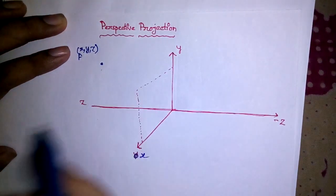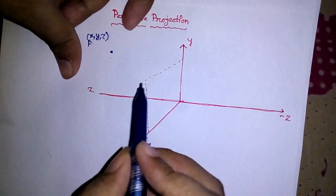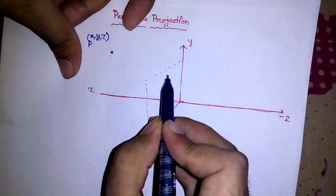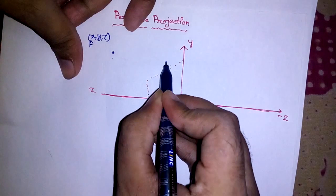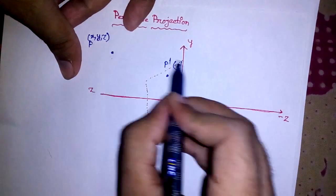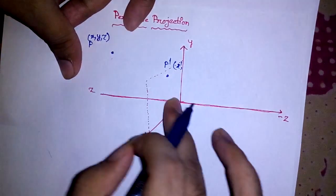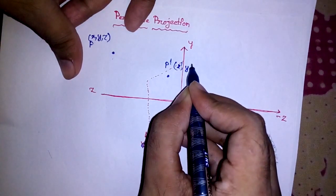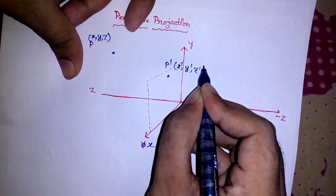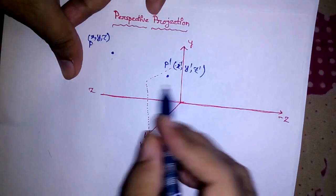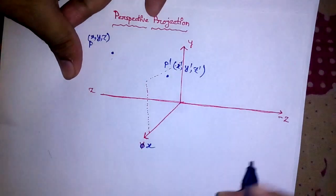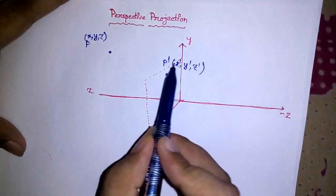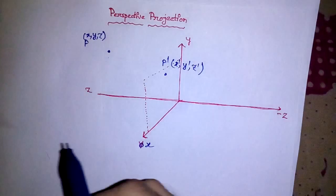I have drawn this axis this way for simplicity. After projection, this point will be at this XY plane — this is P-dash. Since all rays are not parallel to each other, we have X-dash, Y-dash, and Z-dash. Z-dash is zero in this plane; anywhere in this plane the Z value is zero. So now we need to calculate what the values of X-dash, Y-dash are — and Z-dash is obviously zero.